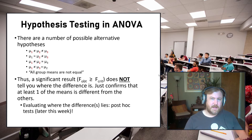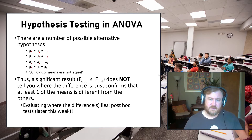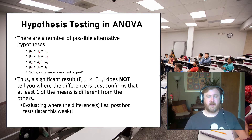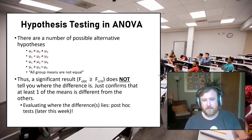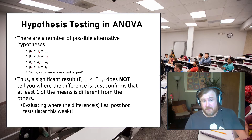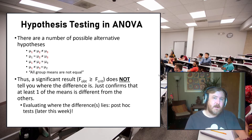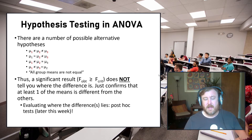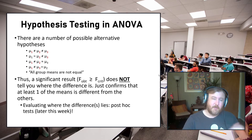A significant F test does not tell you which groups are different from each other. It only tells you that at least one mean is significantly different from one other mean — it could be all three means differ, but we don't know. We have to conduct a follow-up test to tease apart where the differences specifically are, using either a planned comparison or a post hoc test, which we'll cover in the next video.